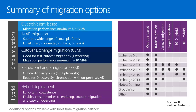Besides these migration types, you have additional options from partner-based solutions. Partners have created and developed migration tools which can also be used for migrations. On the right-hand side, you can see a reference table — pick your source server, for example Exchange 2010, and see what types of migrations are supported. For example, staged migration is not available for Exchange Server 2010, and IMAP migration is available for third-party servers like Domino or GroupWise. Use this table as a reference when planning your migration.